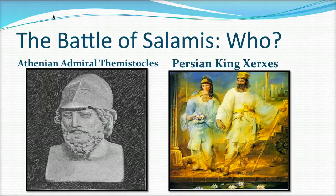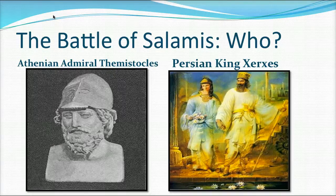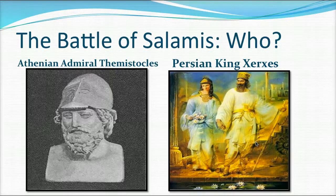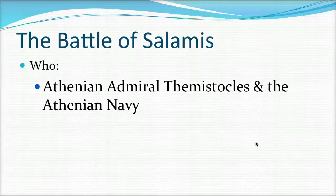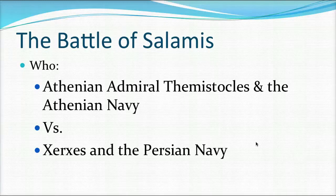Let's start with the who of the Battle of Salamis. On the Athenian side you have Admiral Themistocles, who gets a lot of credit for helping finally defeat the Persians in this battle. On the Persian side you've got Xerxes again — he was king during the Battle of Thermopylae as well, and these battles take place pretty close to one another. This battle takes place at sea, so we have the Athenian Navy versus Xerxes and the Persian Navy.